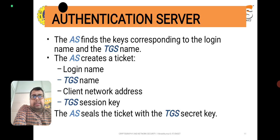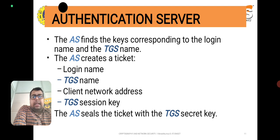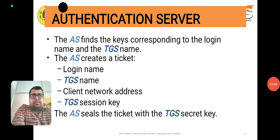The authentication server finds a key corresponding to the login name and TGS name. The authentication server creates a ticket consisting of the login name, TGS name, client network address, and TGS session key. The authentication server then seals the ticket with the TGS secret key.